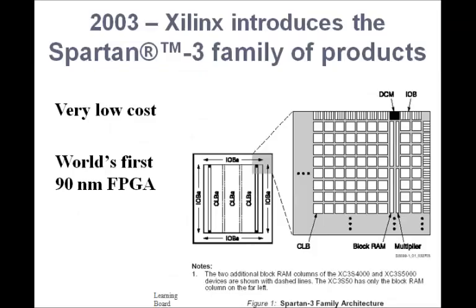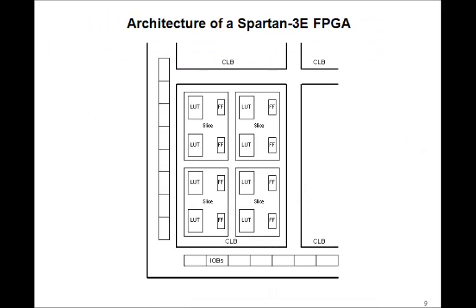In 2003, they introduced the Spartan III family. The Nexus 2 board uses the Spartan IIIe, whose CLBs contain four slices. Each slice has two lookup tables — again four inputs and one output — and two flip-flops. The I/O blocks go around the edge.